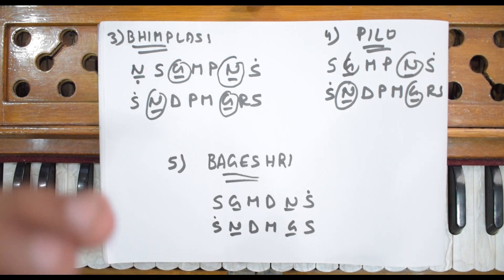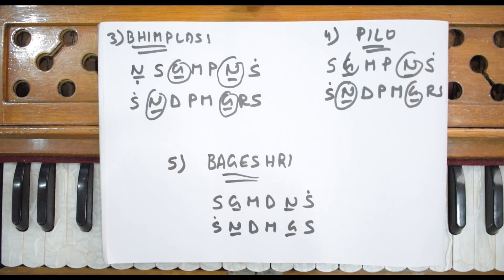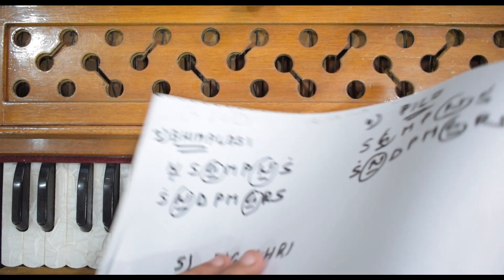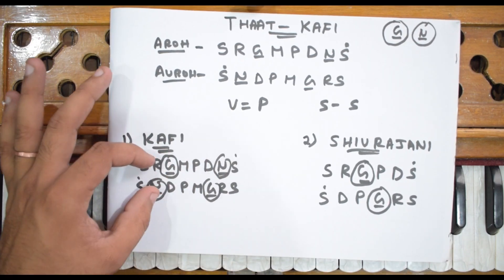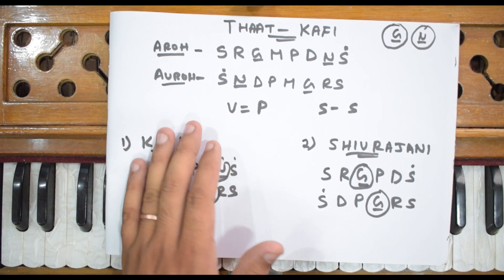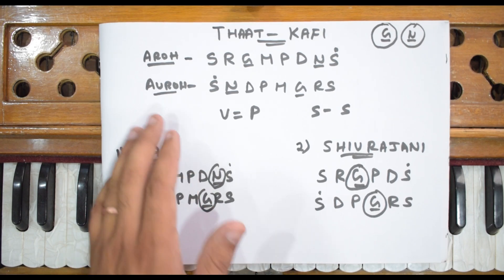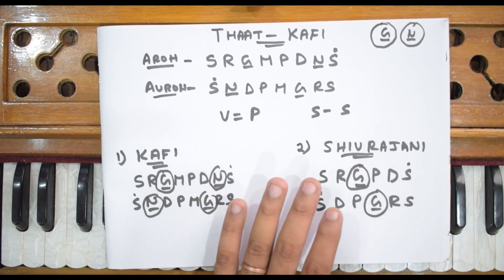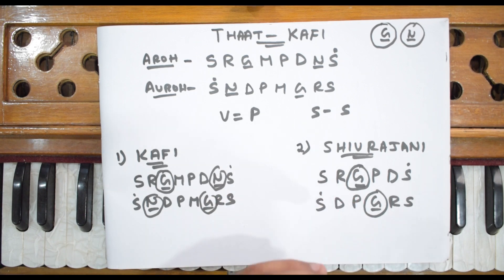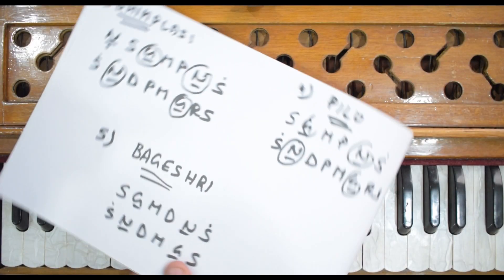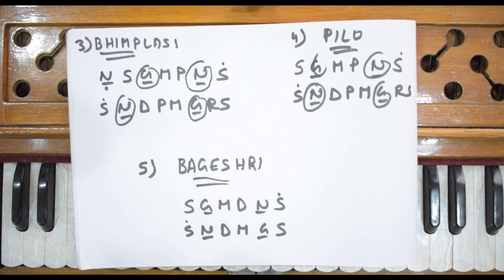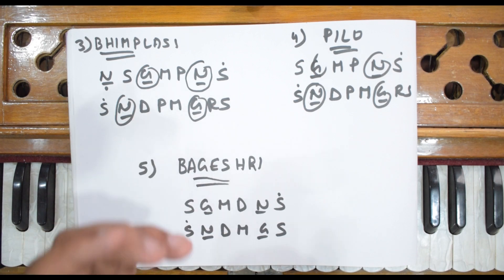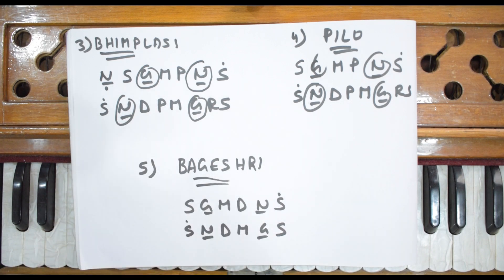You can go to our website www.harmoniumguru.org and visit the raag section. There you will find all the raags and their related songs. Search for Raag Kafi and you will get Raag Kafi and all the songs in it. Similarly, you will find Raag Shivranjani and can practice its songs.